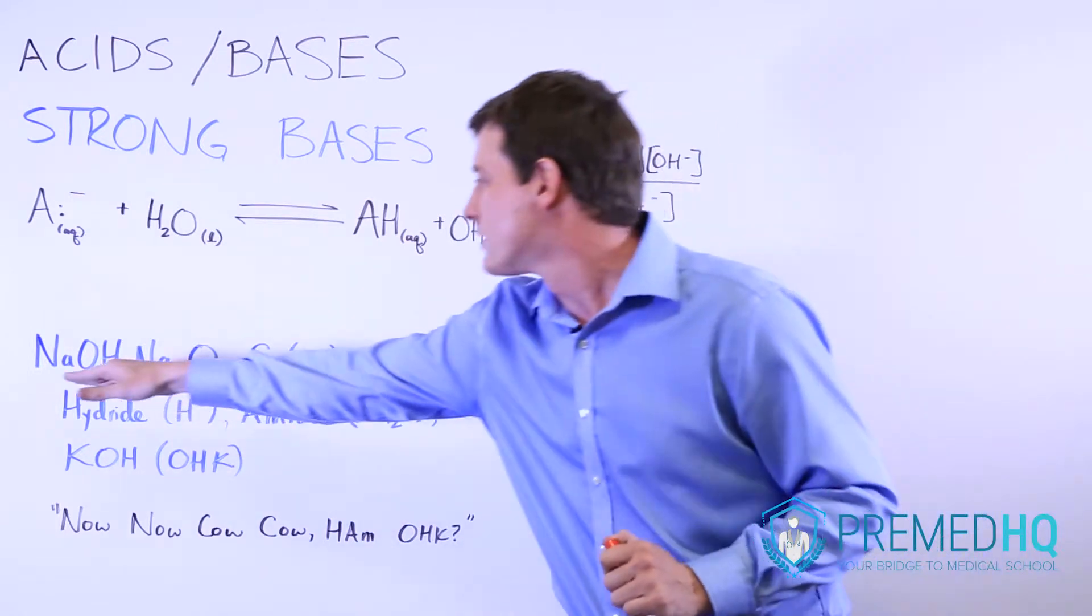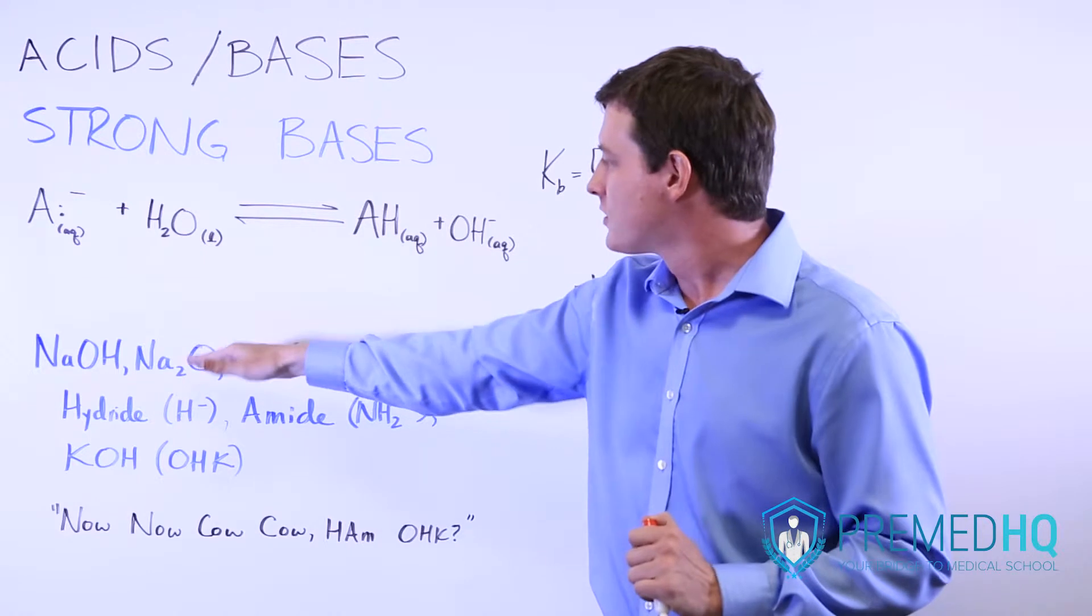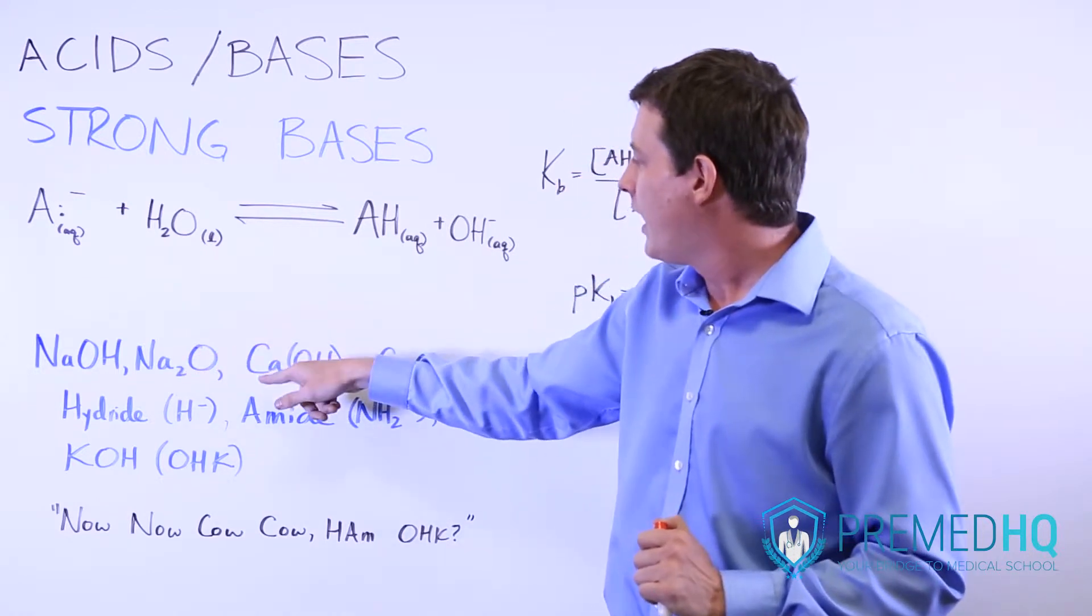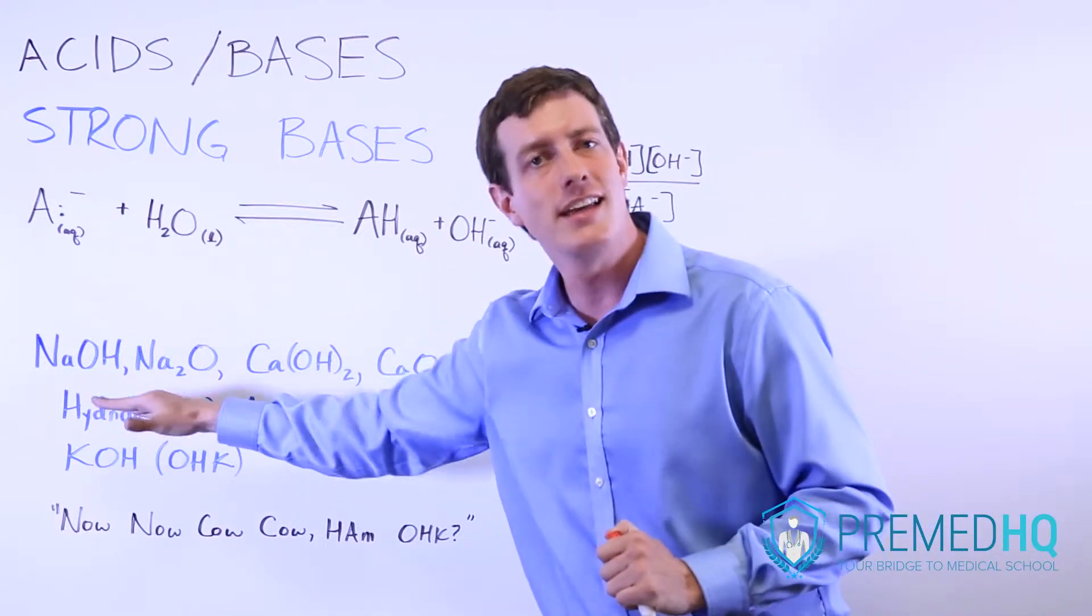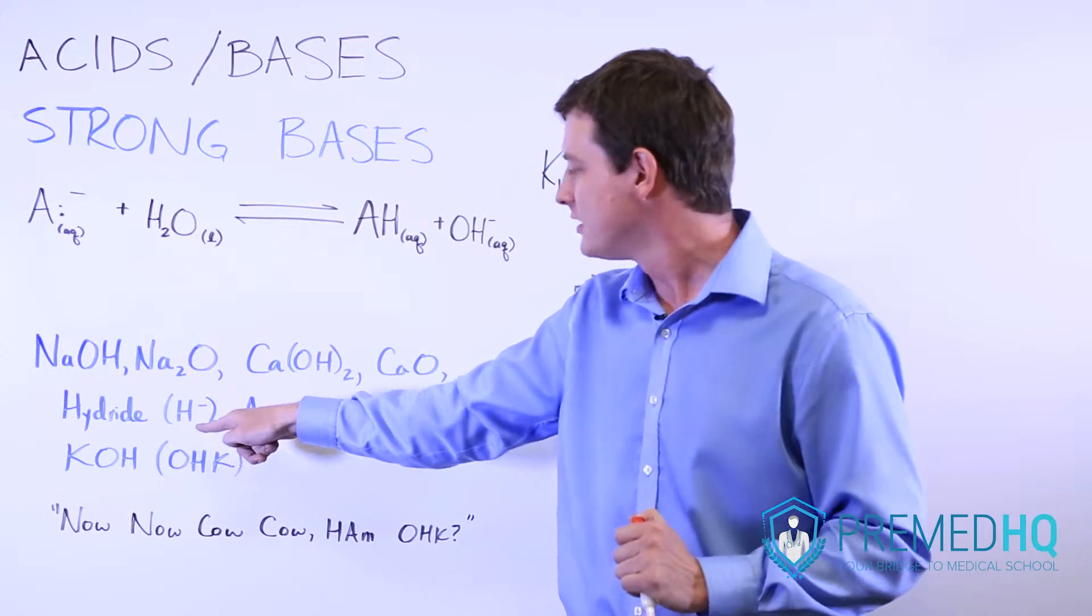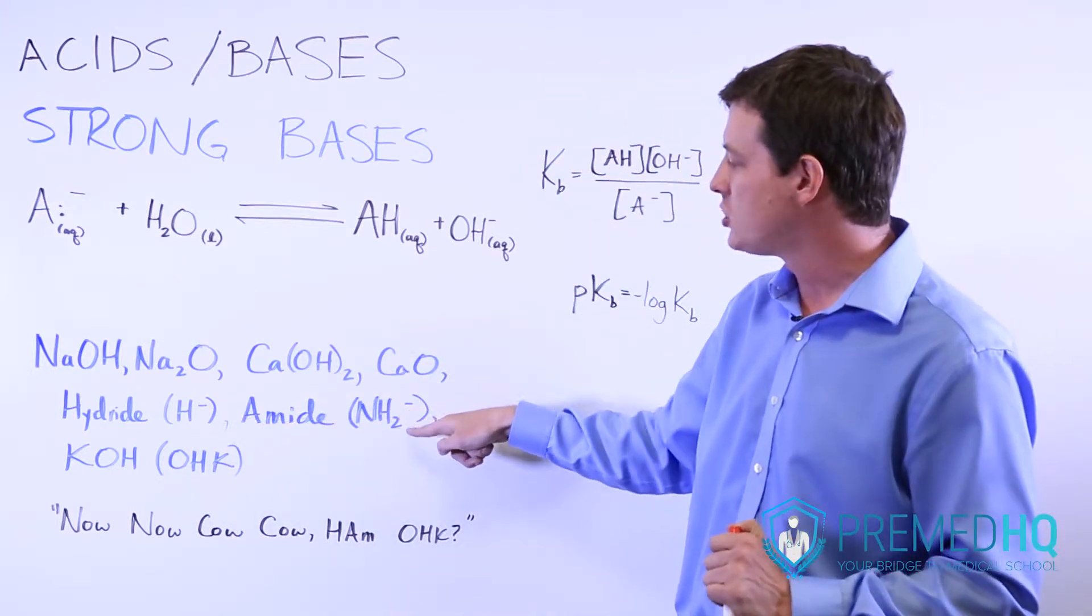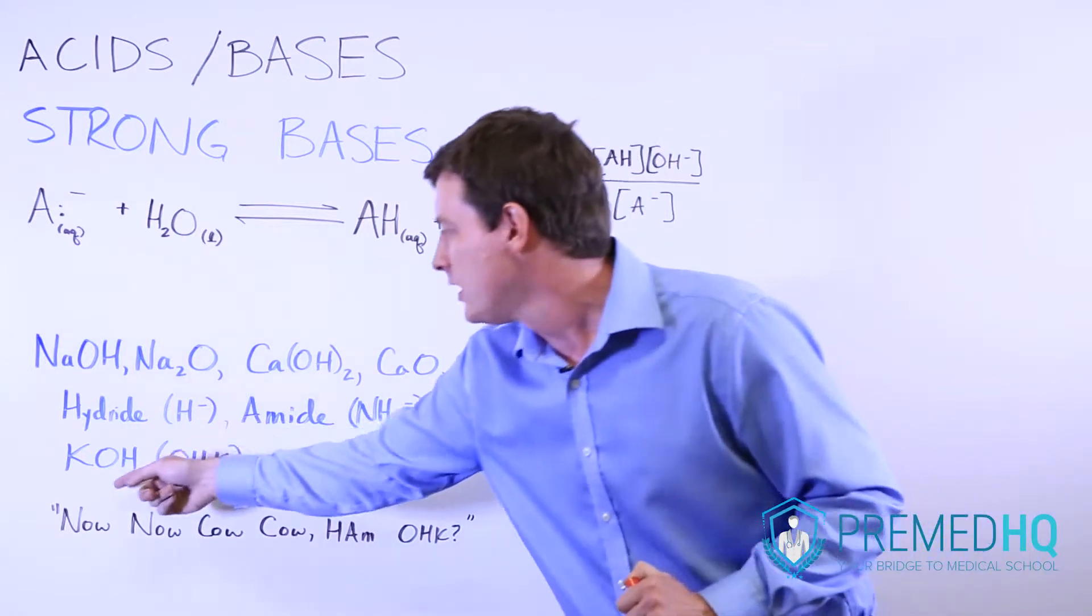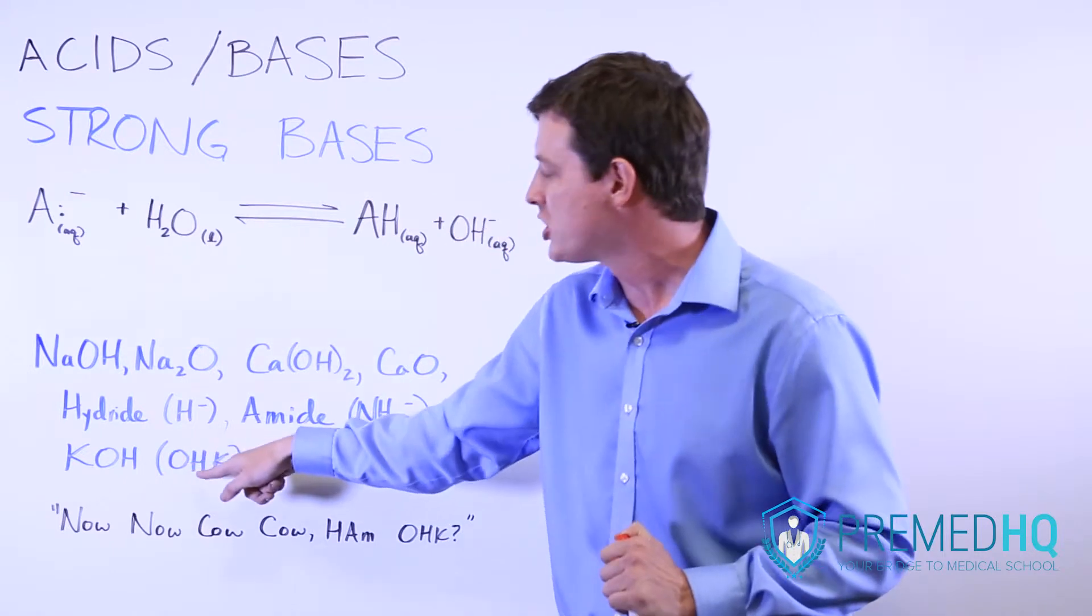So what we have here is NaOH, sodium hydroxide, we have Na2O, sodium oxide, we have calcium hydroxide, calcium oxide, any hydride, any species that yields a negatively charged hydrogen, anything that is an amide, anytime you have NH2-, and then you also have potassium hydroxide, KOH, which I reorganize as OHK.